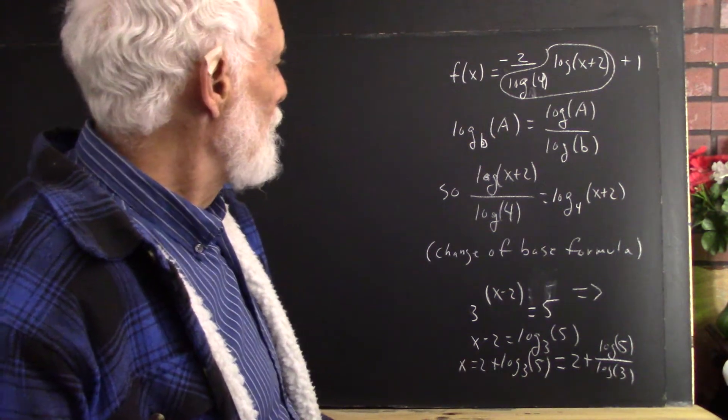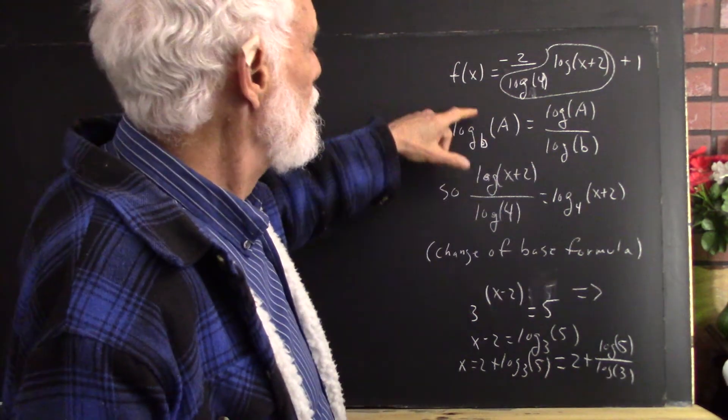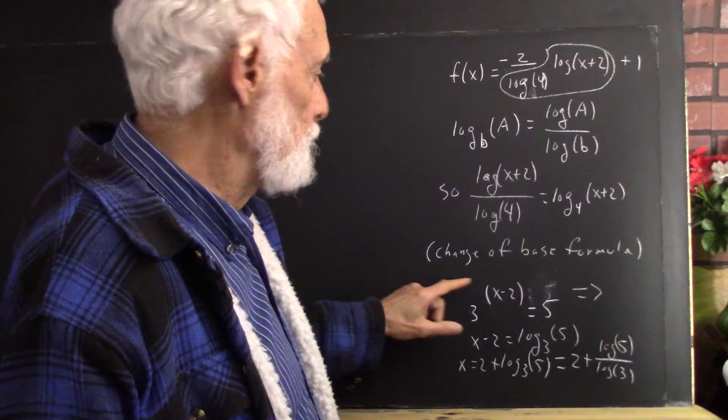And the answer to that is that because log base b of a is log a over log b, that's your change of base formula.